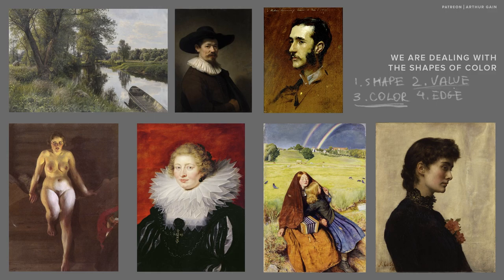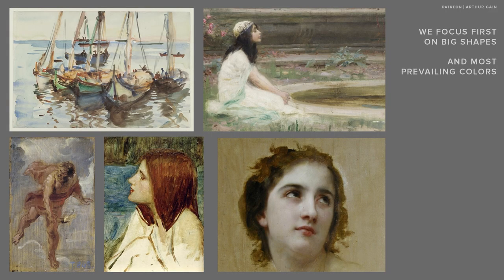But color is always connected to value. In every painting we have here, no matter how sophisticated or simplified the design is, how many light sources we have — two light sources here, one light source in this case — it doesn't really matter how finished the painting is or how detailed the background is. Every time we deal with just shapes of colors, and the best way to approach it is to start with simplified basic colors, the general colors we see in big shapes when we squint.